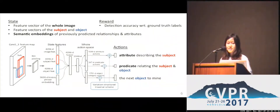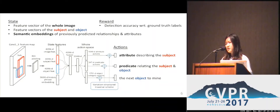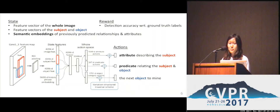We pass this state vector through a deep Q-network and output three actions: an attribute describing the subject, a predicate relating the subject and object, and the next object to mine in the following time step.